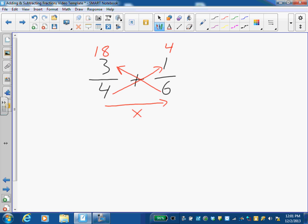So when I rewrite this I have eighteen over four times six is twenty-four, plus four over twenty-four. And I add those two together and I get twenty-two over twenty-four.